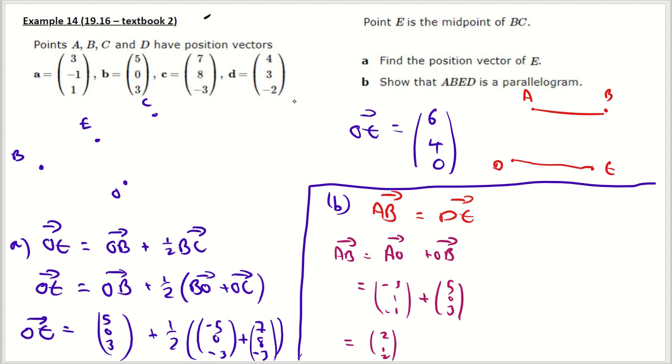And then my other one, which is D, E, is going to equal to D to O, plus O to E, which is going to be the opposite of that, so negative 4, negative 3, 2, plus 6, 4, 0. I guess this kind of checks part A as well, because if it doesn't work, then it could be the mistake there.